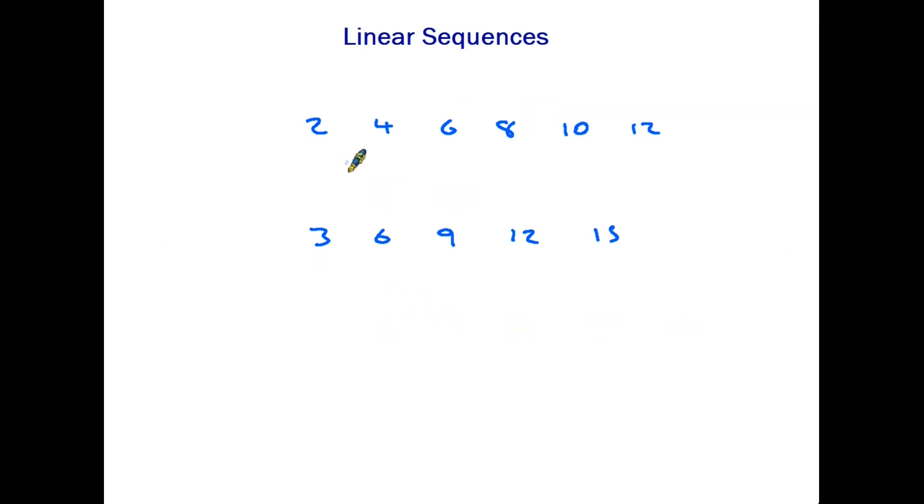Now every sequence has its own rule or formula to describe how it works and in order to create this rule the first thing we do is simply look at the gap between them. So going back to this first sequence here we have a gap of 2. Therefore this sequence is known as 2n. We always use the letter n when we are describing linear sequences.